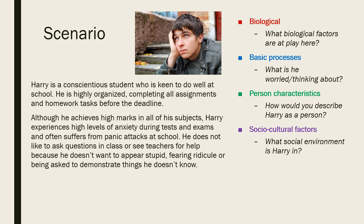Now that we've gone through each of the four levels of explanation, let's apply them to a scenario. Harry is a conscientious student who is keen to do well at school. He is highly organised, completing all assignments and homework tasks before the deadline. Although he achieves high marks in all of his subjects, Harry experiences high levels of anxiety during tests and exams and often suffers from panic attacks at school. He does not like to ask questions in class or see teachers for help because he doesn't want to appear stupid, fearing ridicule or being asked to demonstrate things he doesn't know. Using the prompting questions on the side, think about how you could explain Harry's behaviour using each of the four levels.